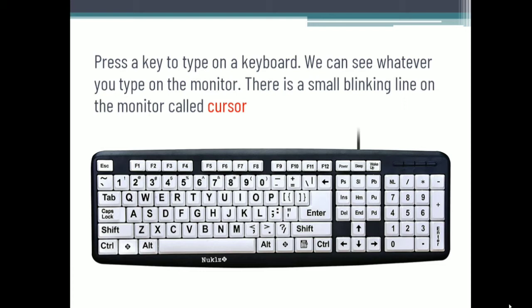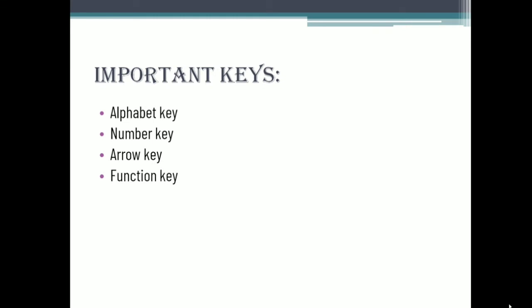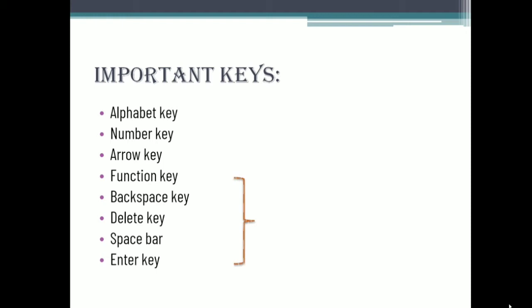We have already studied five types of keys on the keyboard. Let's check what the different types are. The first one is the alphabet key, the second one is the number key, the third one is the arrow key, and the fourth one is the function key. We can also see some other keys: the backspace key, delete key, space bar key, and enter key. These keys together are called special keys.